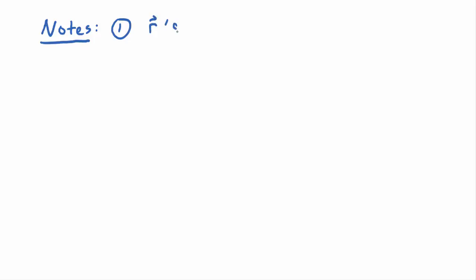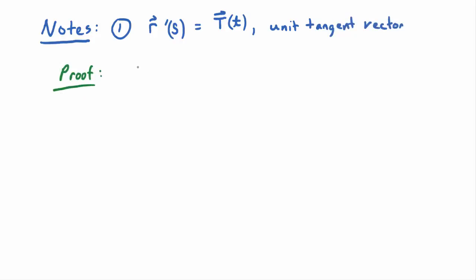Some notes on the arc length parameter. It turns out that if you parameterize R in terms of S and take its derivative, R prime of S equals T of T — the unit tangent vector, or the unit tangent vector as we defined it. Recall that T of T is computed by taking R prime of T and dividing by its magnitude, giving a unit vector tangent to the curve.